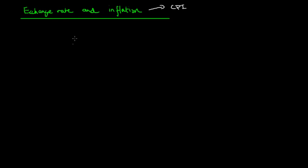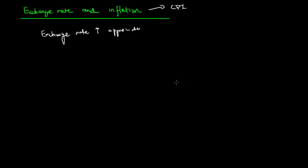So, what the exchange rate can do is it can fluctuate either upwards or downwards. The exchange rate can either appreciate, denoted by an upwards arrow, or depreciate, denoted by a downwards arrow.